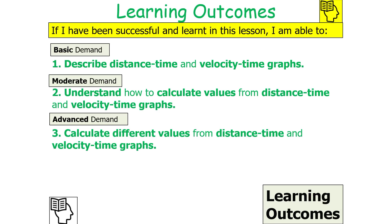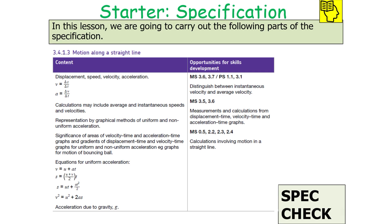If we've been successful in this lesson, we should be able to describe the distance-time and velocity-time graphs, understand how to calculate values from them, and actually calculate different values from distance-time and velocity-time graphs. This links into AQA A-level physics specification 3.4.1.3: motion along a straight line.